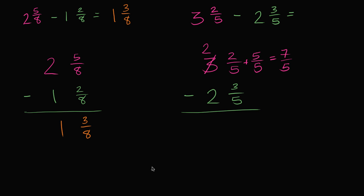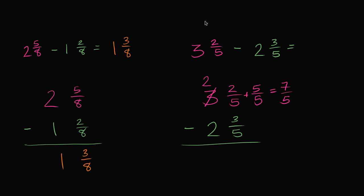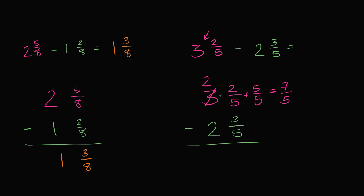So another way of thinking about it, 3 and 2 fifths is the same thing as 2 and 7 fifths. These two things are equivalent. Why? Well, I took 1 away from here to get to 2 and then I added that 1 over here. 1 is the same thing as 5 fifths. 2 fifths plus 5 fifths is 7 fifths.